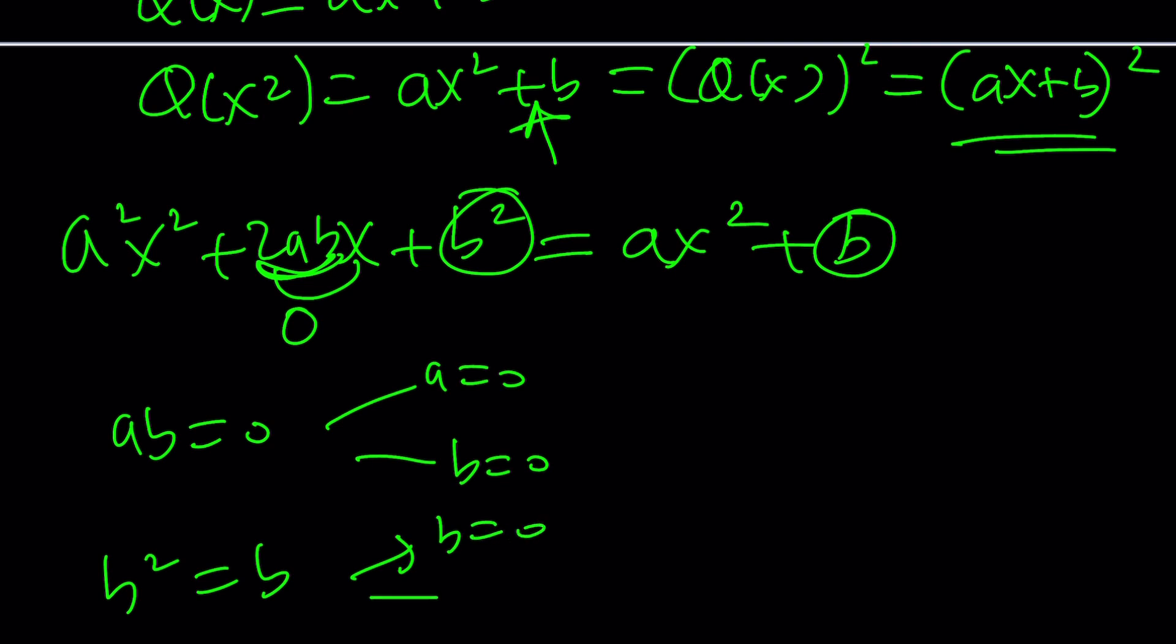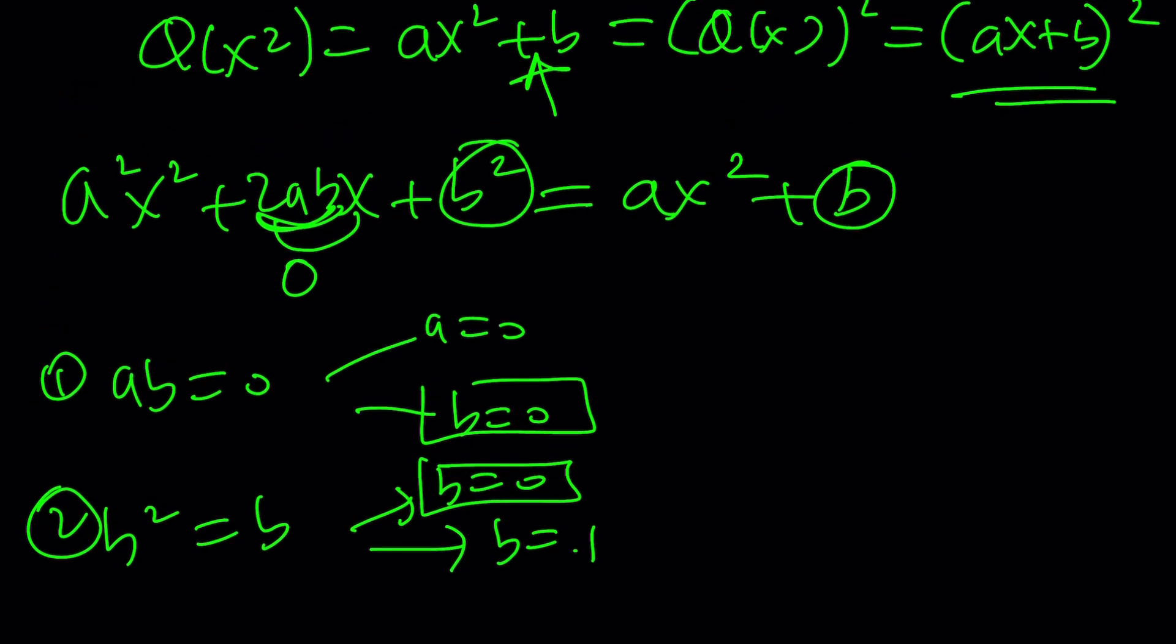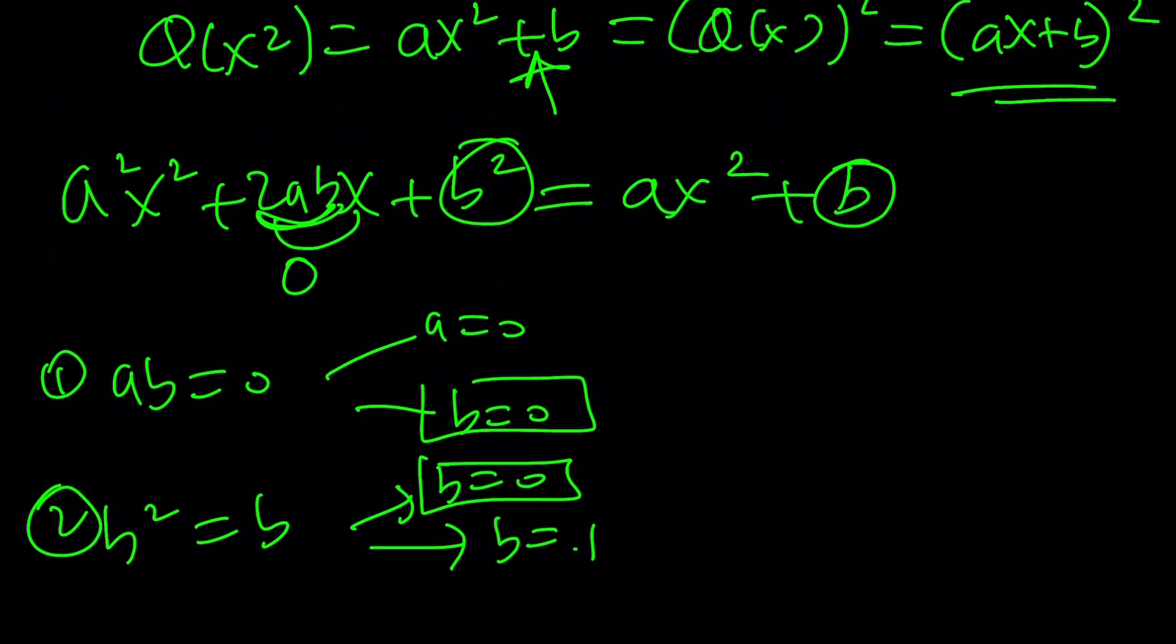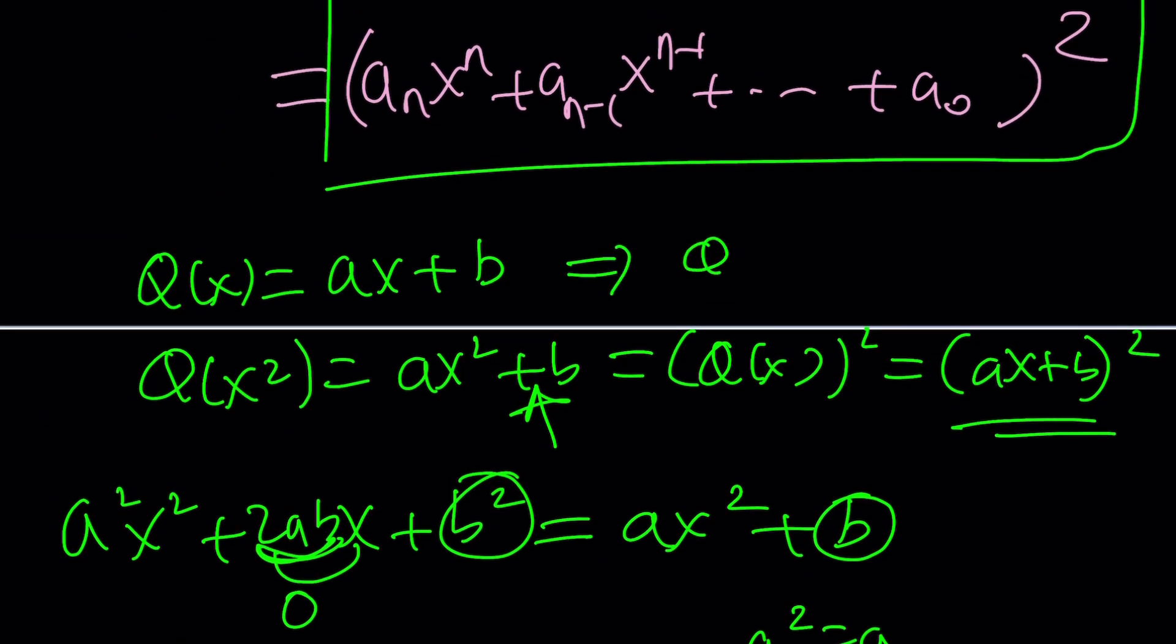But the last one also gives us b² equals b. This means b is 0 or b is 1. Now, if you look at the first two conditions, then you realize b equals 0 is probably a good choice. Let's go with that because if b is 1, a needs to be 0, then our polynomial is not going to be linear. It's going to be constant, which again, we're going to look at separately. So now, if b is 0 and a² equals a, I don't want a to be 0, so I want a to be 1. What does that mean? a is 1, b is 0. That means that Q(x) equals x will satisfy this equation.